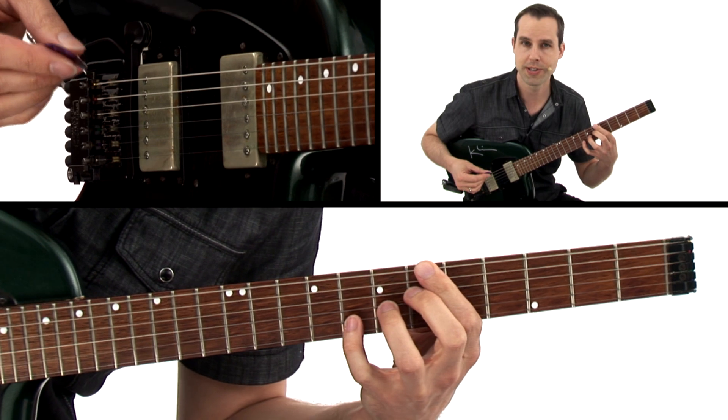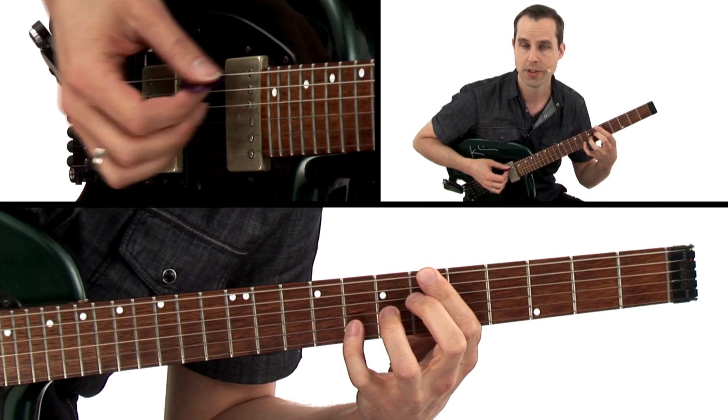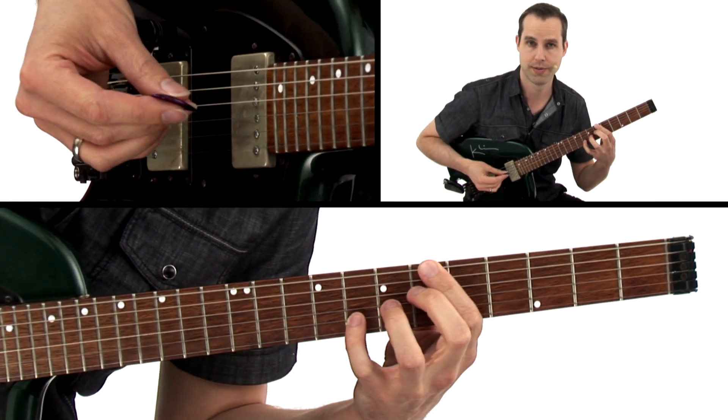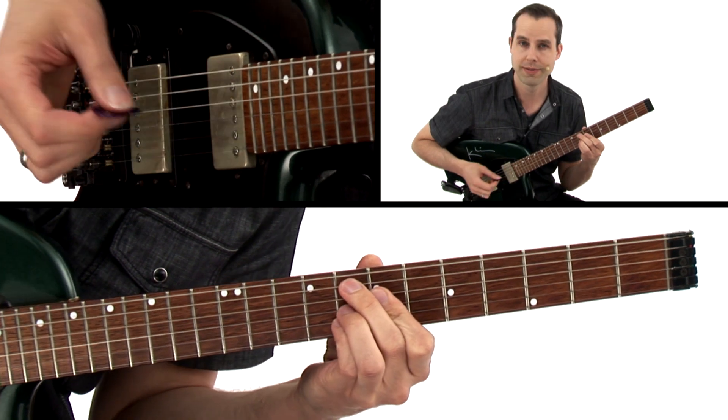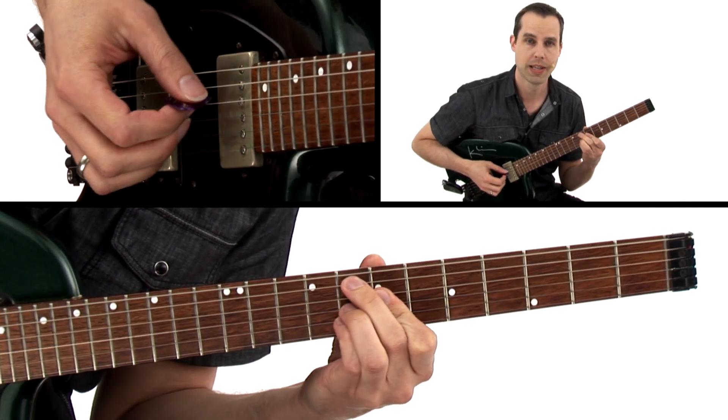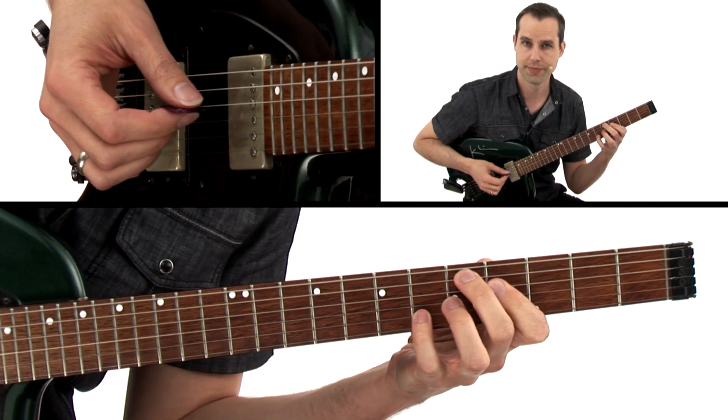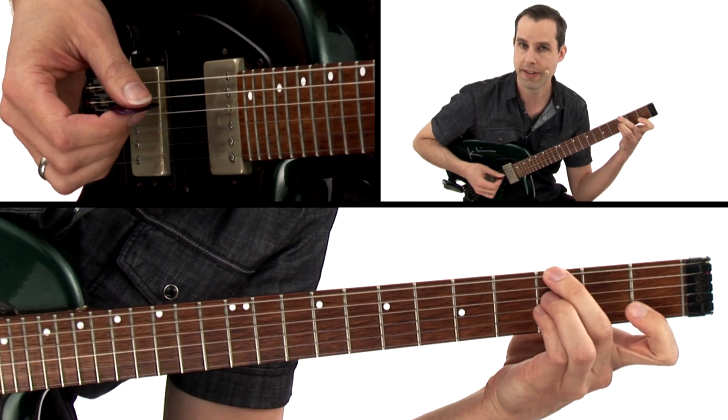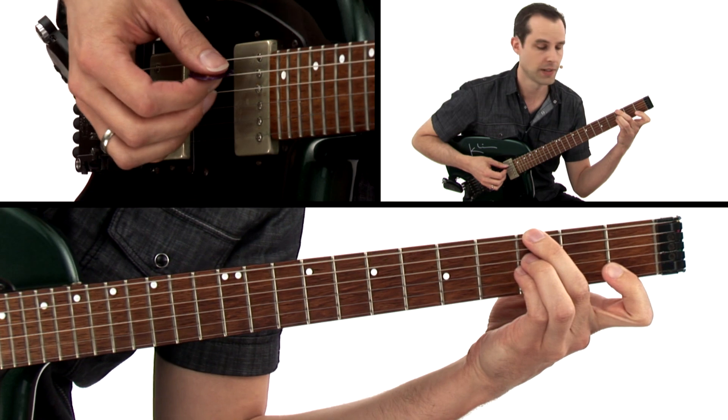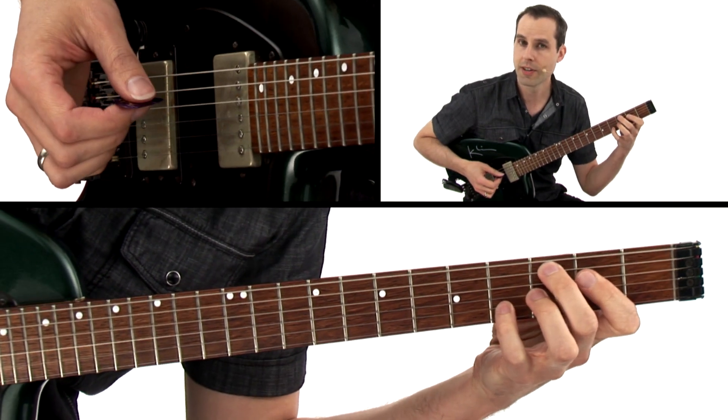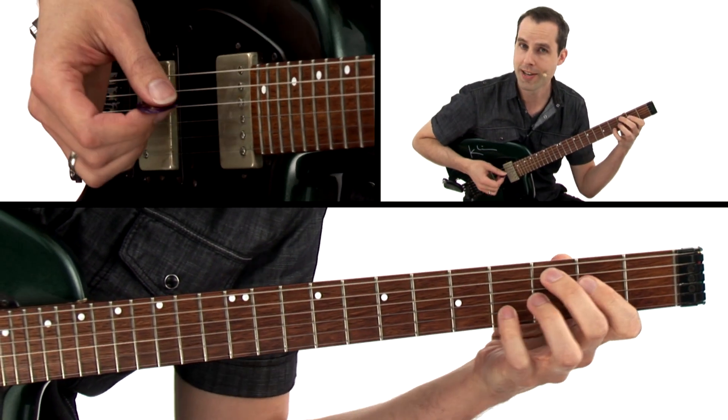Then Bb13 or Bb7 for two measures, then to F9 for one measure, then down to D7 sharp 9, then G minor 7 or G minor 11, to C7 altered or C7 sharp 9.